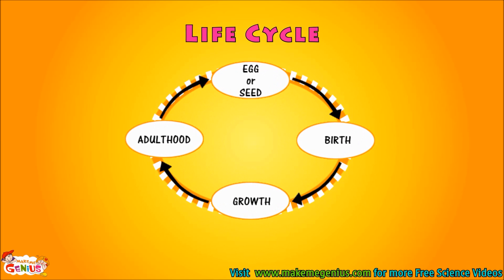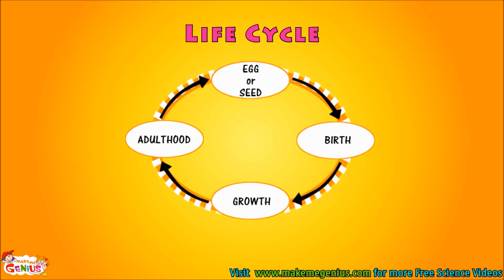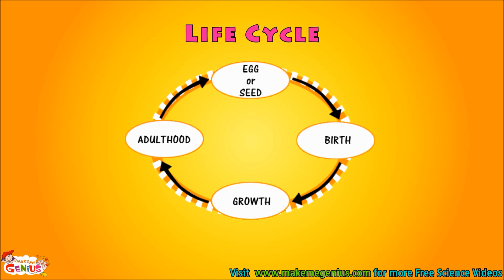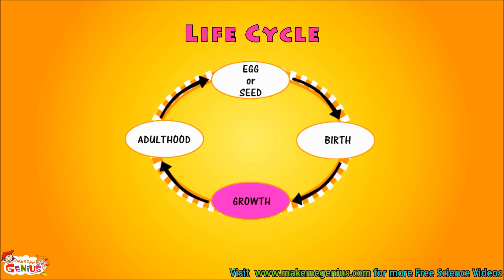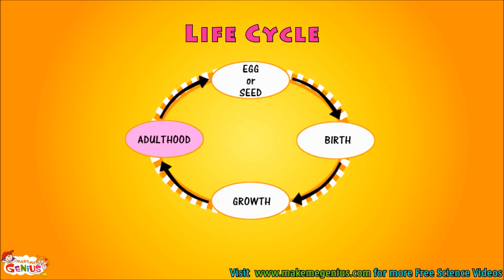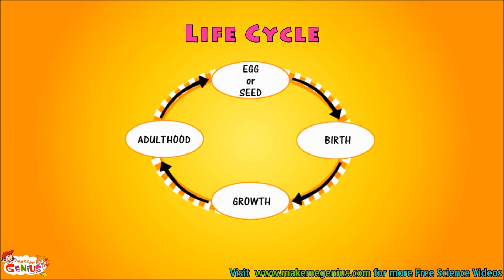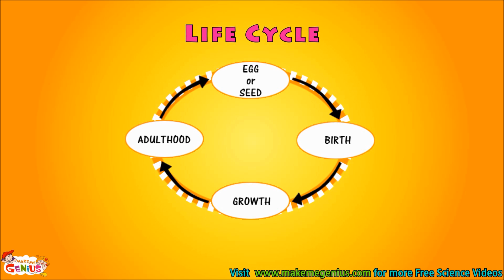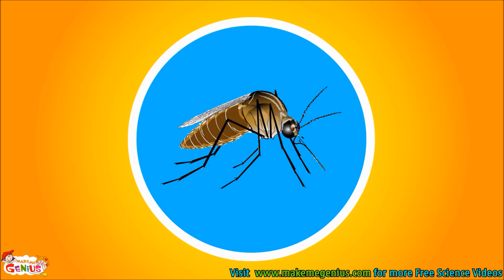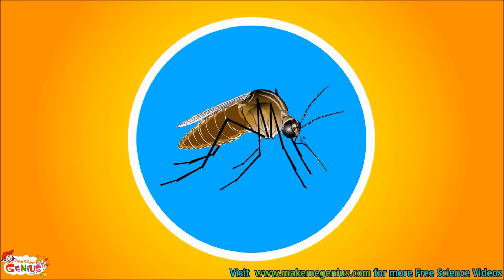Look at this picture. It shows a simple life cycle. All living species keep changing throughout their life. It starts from an egg or seed. They take birth, they grow up, then they become adults, and they reproduce at this stage. When a plant or animal reaches young age, they can make babies.